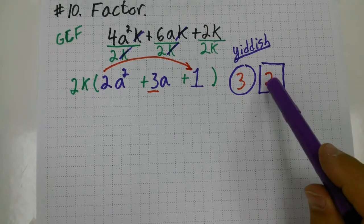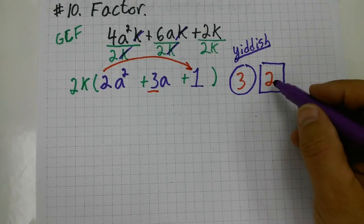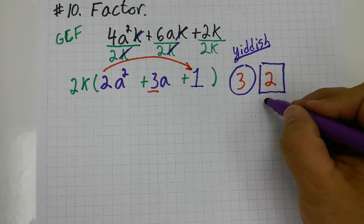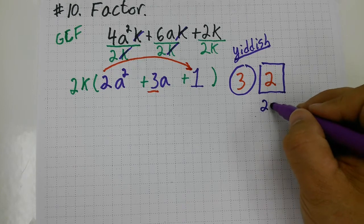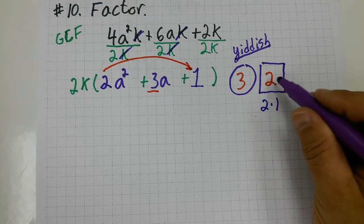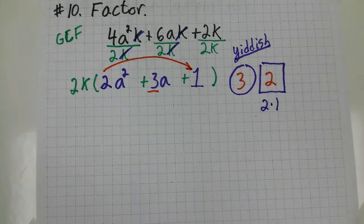Now, you have to figure out what times what multiplies to equal 2, that adds up to equal 3. And I believe it's 2 times 1 multiplies to equal 2 and adds up to equal 3.